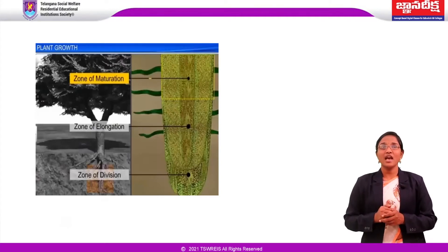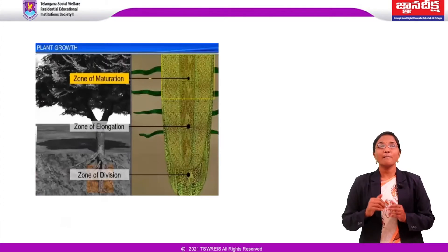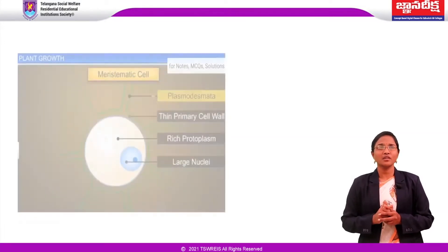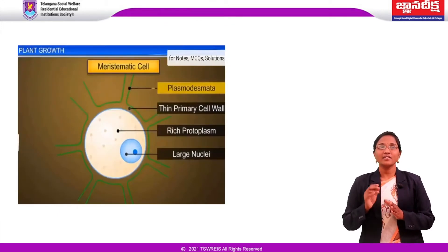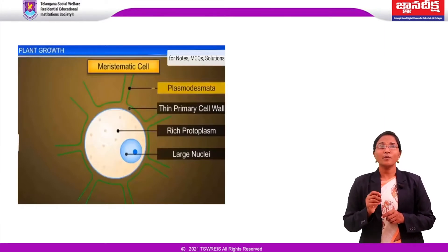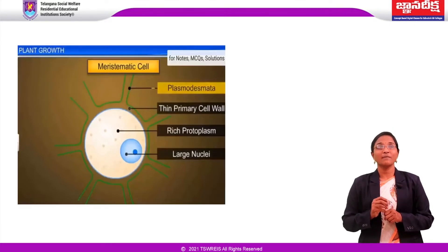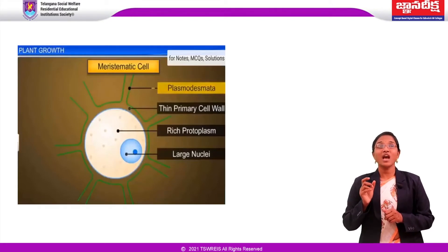Let us understand these phases by looking at root tips. In the meristematic phase of growth, at the root apex and shoot apex, the cells are dividing constantly. The cells in these meristematic regions are rich in protoplasm and possess large conspicuous nuclei. Their cell walls are primary in nature — thin and made up of cellulose with abundant plasmodesmatal connections.